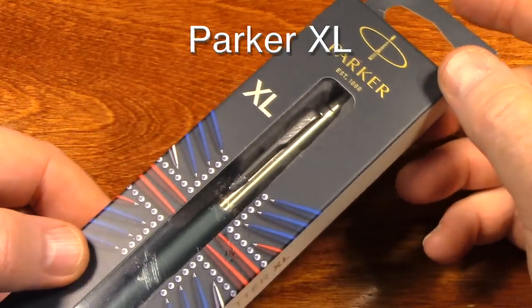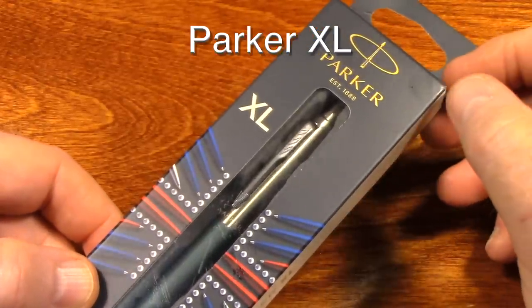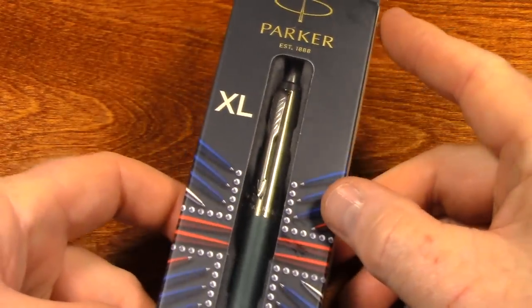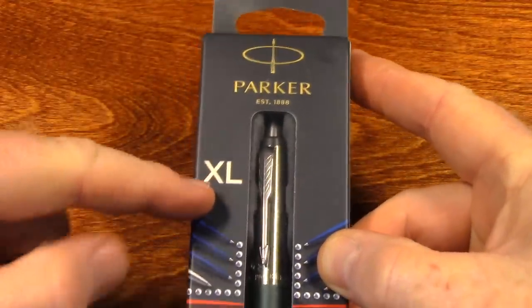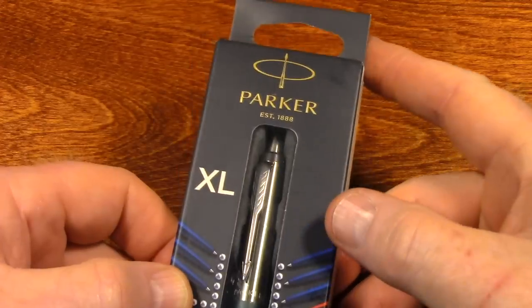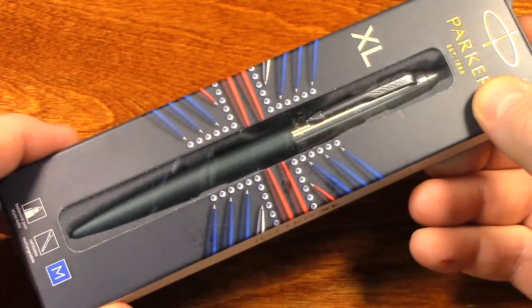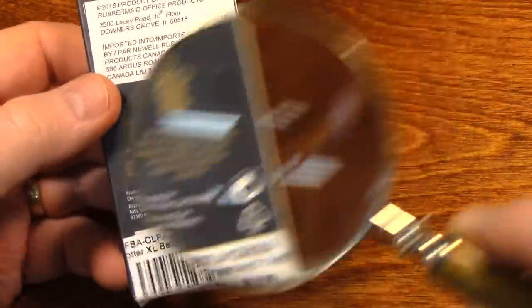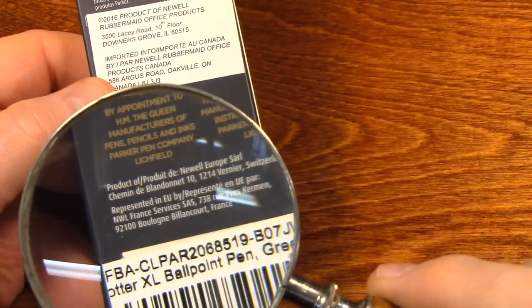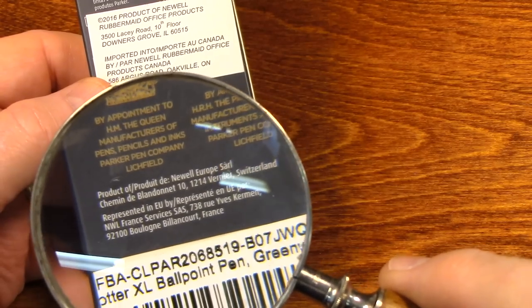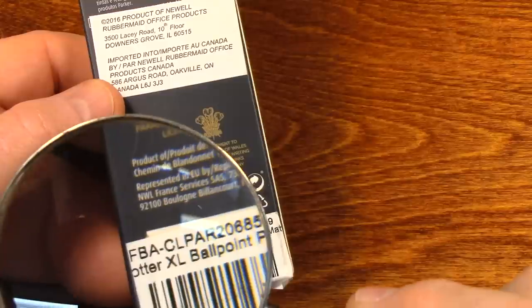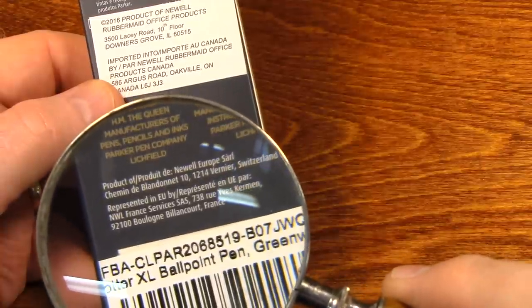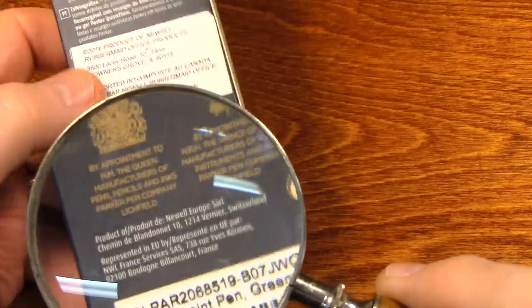Now, here's a new pen that I've picked up. At least it's been around a while, but I'm just now getting one. And this is a Jotter as well. It's called a XL, extra large. It's bigger than a regular Jotter. And looking at the back, it says it was made in France. But I see the word Switzerland mentioned. There's a lot of countries mentioned on the back of this. It was imported into Canada by Newell Rubbermaid Office.